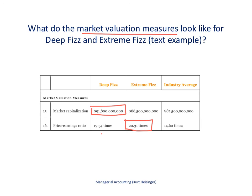In summary, this textbook example is about figuring out which vendor to use based on financial data. Both Deep Fizz and Extreme Fizz are financially healthy relative to the industry average across all ratio categories. In that scenario, we'd likely look beyond financial measures at the products, services, and other non-financial factors to make a final decision.